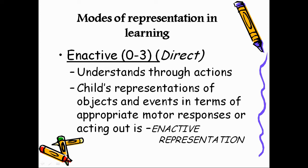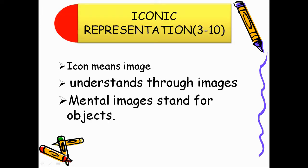The second stage proposed by Bruner is iconic representation, for ages 3 to 10 years. This is the stage of imagery. Here the child understands the world through images — icon means image. Mental images stand for objects or are substitutes for actual objects. The concepts that emerge from enactive experiences are internalized in the form of icons. For example, when a child draws the picture of an animal or an object instead of the actual thing, that is called iconic representation.